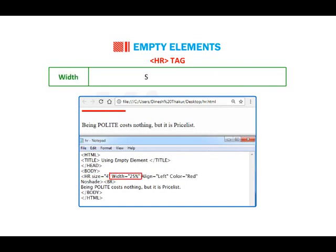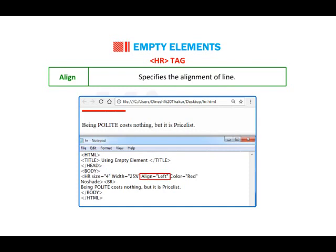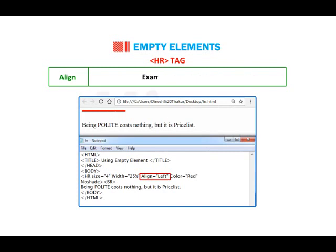Width: specifies the length of the line. The value can be given either in pixels or percentage. Example: hr width="25%". Align: specifies the alignment of the line. Alignment can be set to right, left, or center. Example: hr align="left".